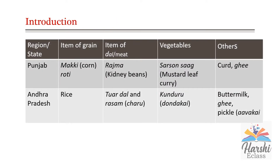Introduction: here we are going to talk about the food habits of two states — Punjab and Andhra Pradesh. It may vary from person to person according to their availability of food items. For example, in Punjab, the grain item they eat is makki roti, which is made up of corn. Rajma, also called kidney beans, vegetables, mustard leaf curry, and milk products like curd and ghee. Coming to the state Andhra Pradesh: rice, turdhal, and rasam.